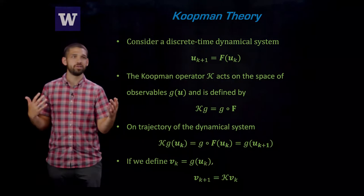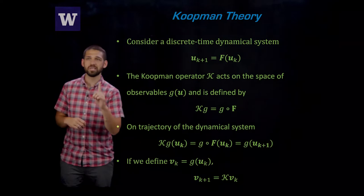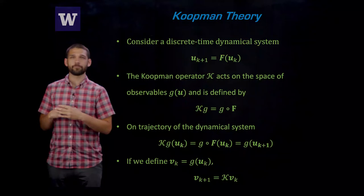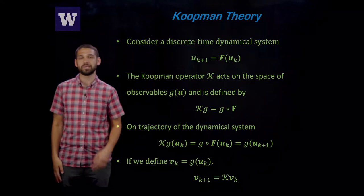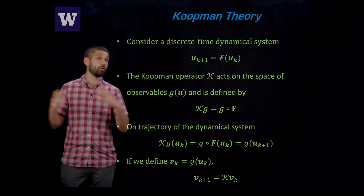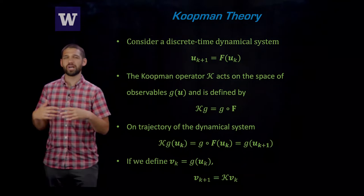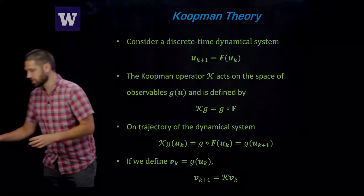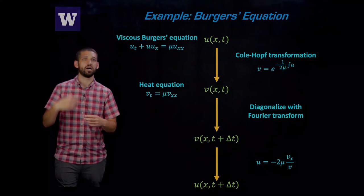But in practice, we mostly don't know how to actually find this operator and know what these linear dynamics look like. There are a few notable exceptions. One of them is the Cole-Hopf transformation, which linearizes Burgers equation. And then the other one is the inverse scattering transform, which linearizes a class of completely integrable PDEs like KDV or nonlinear Schrodinger. So those are some examples, really the only examples where we know how to linearize some PDEs. So to develop our method, we actually started with one of those to use as an example to figure out the methodology.